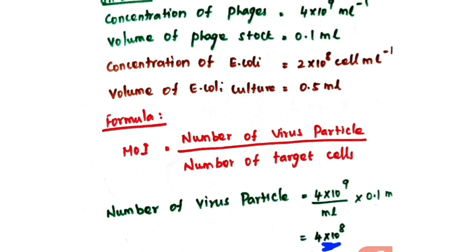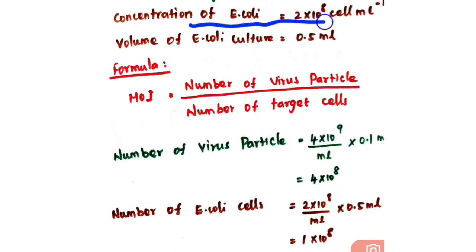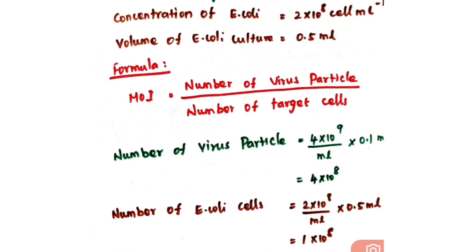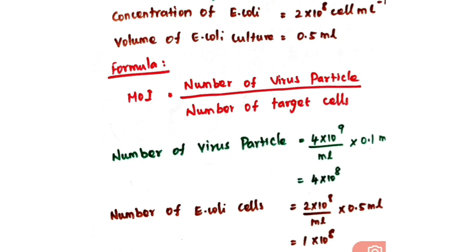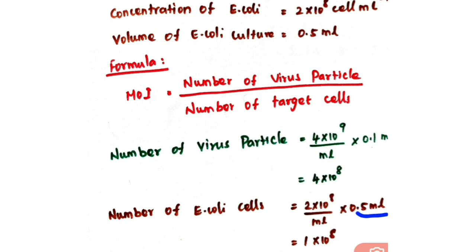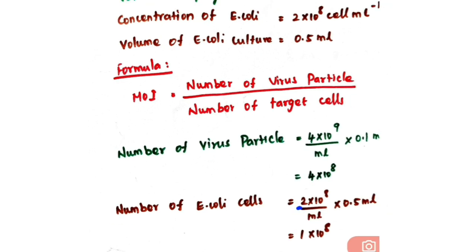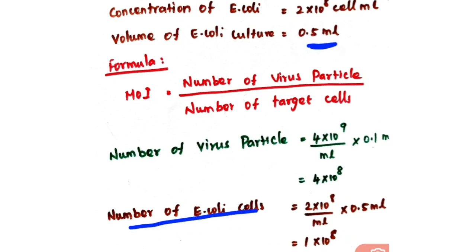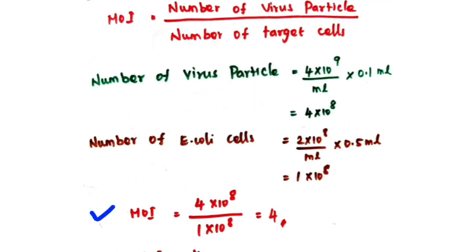Concentration of E. coli is 2 × 10⁸ cells per ml, and volume of E. coli culture taken is 0.5 ml. So number of E. coli cells equals 2 × 10⁸ × 0.5. Since 1 ml has 2 × 10⁸ cells, 0.5 ml has 2 × 0.5 = 1, so number of E. coli cells present in 0.5 ml is 1 × 10⁸.